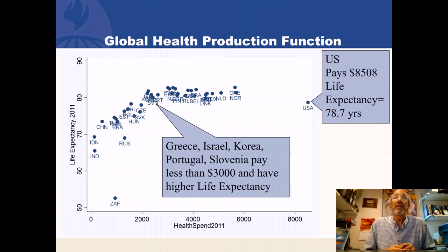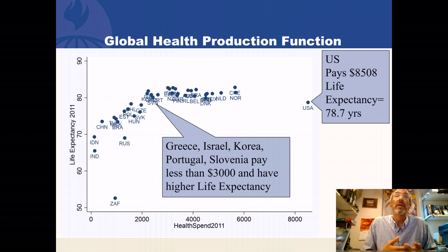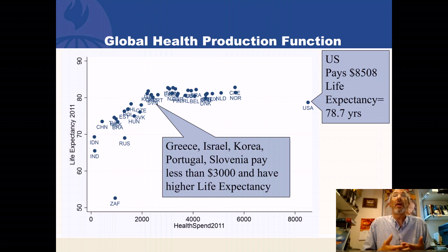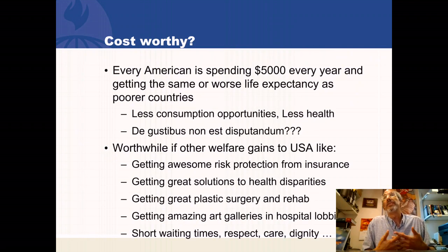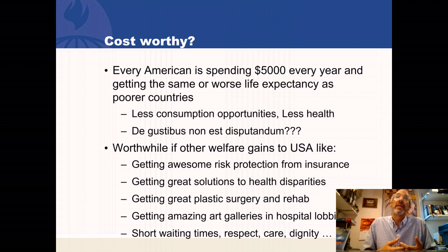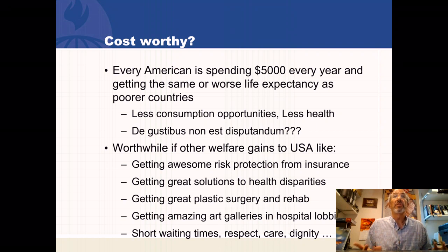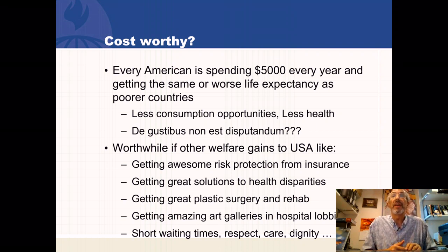Greece, Israel, Korea, Portugal, and Slovenia are paying less than $3,000 per person per year and all have higher life expectancies than the USA. Some are poorer countries with lower GDPs per capita — they have a social determinants disadvantage, yet they're still outperforming us on life expectancy. In terms of cost-worthiness, we're spending about $5,000 extra compared to Korea, Israel, and Greece, and getting the same or worse life expectancy. We're taking that $5,000 and getting no additional life expectancy.